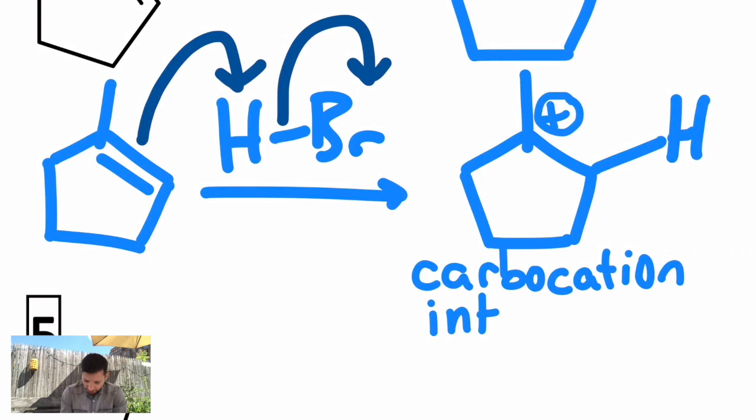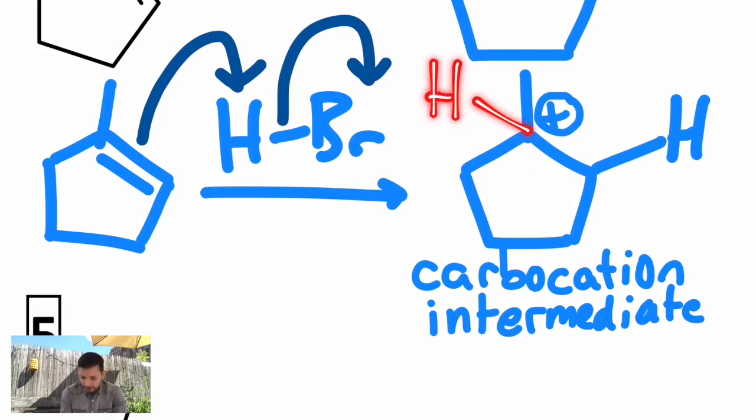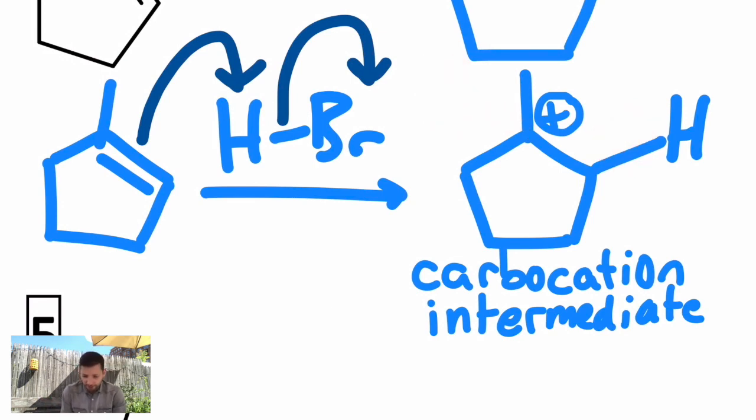This one's okay, though. It's tertiary. That leads me to why we actually get the cation on that position. I certainly could have drawn an H on the more substituted carbon, and a plus on the less substituted carbon, but that's not what carbocations want. They want to be more stable.